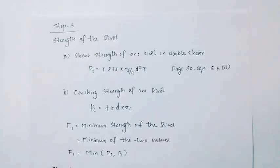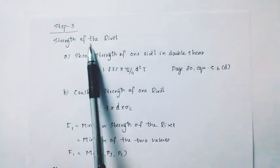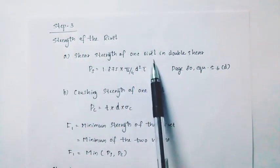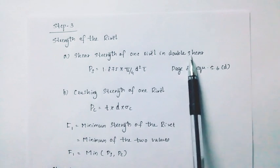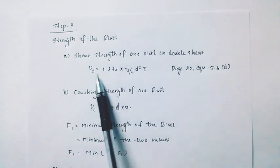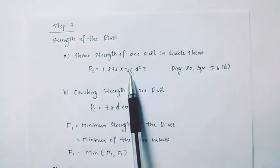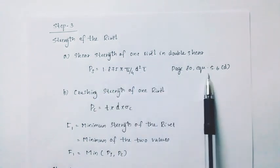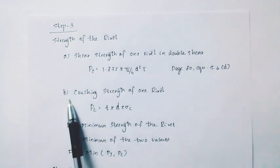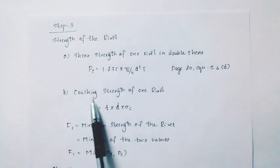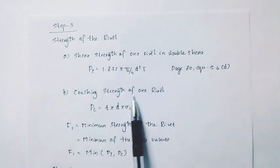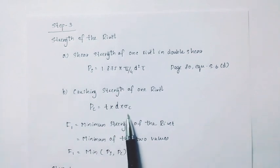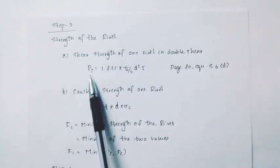Step 3 is called Strength of the Rivet. The strength of the rivet in double shear: P is equal to 1.875 into pi by 4 into D squared. Section B is Crushing Strength of the Rivet: Pc equals T into D into sigma C.